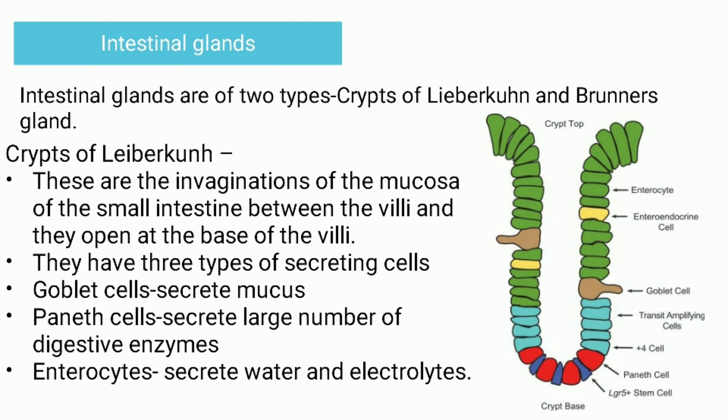The last digestive glands are the intestinal glands, which are of two types: crypts of Lieberkühn and Brunner's glands. The crypts of Lieberkühn are invaginations of the mucosa of the small intestine between the villi, opening at the base of the villi. They have three important types of secreting cells: goblet cells, Paneth cells, and enterocytes. Goblet cells secrete mucus, Paneth cells secrete digestive enzymes, and enterocytes secrete water and electrolytes.